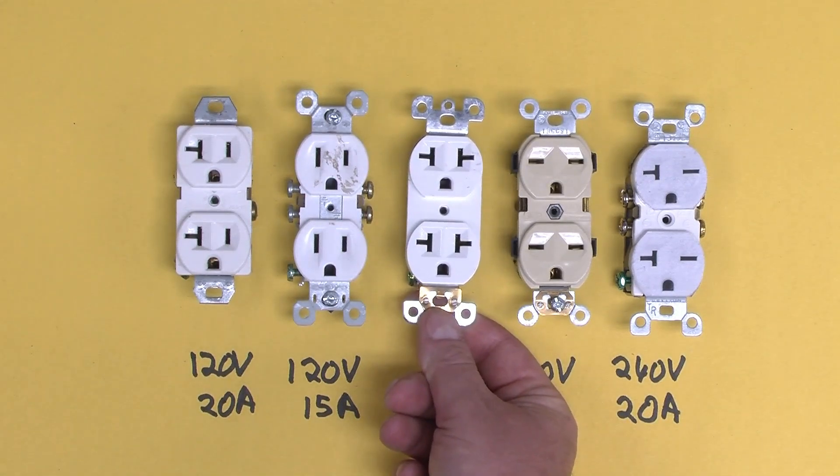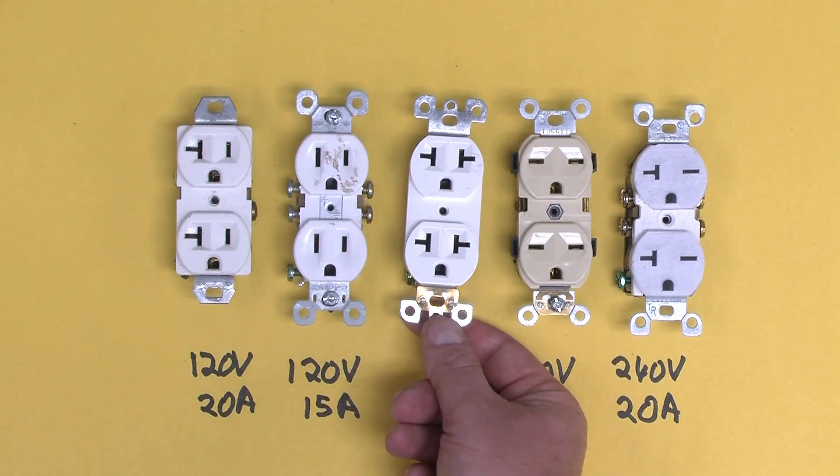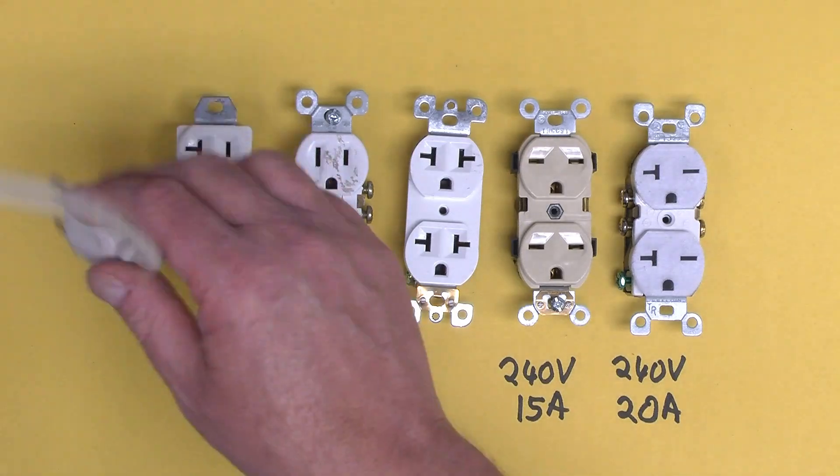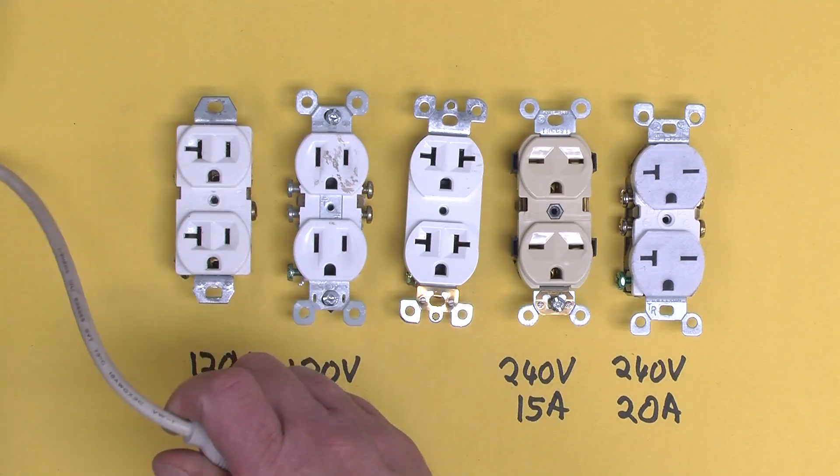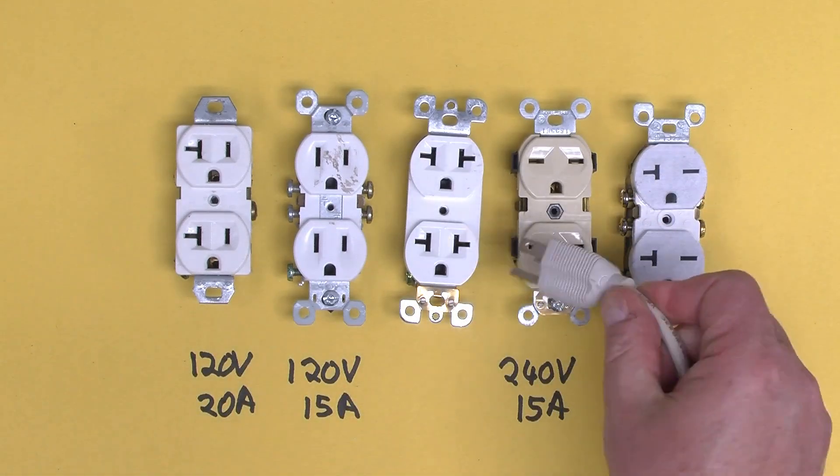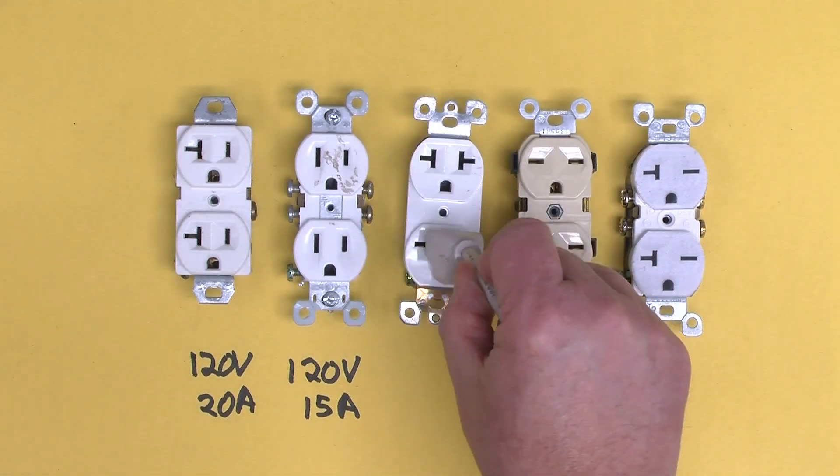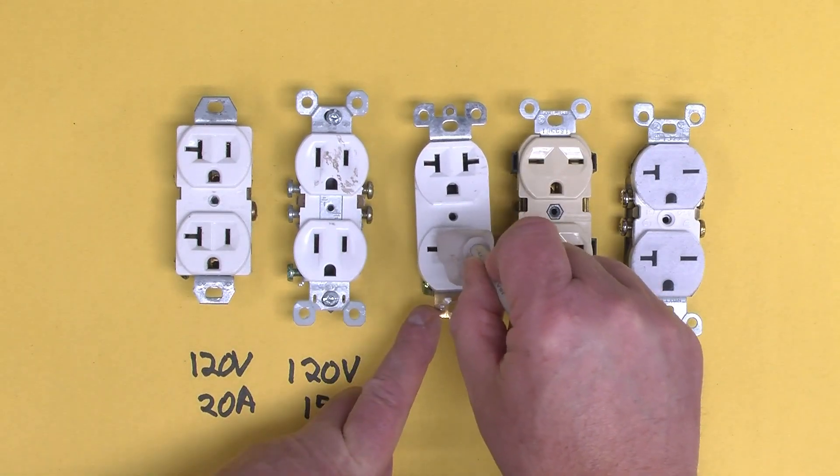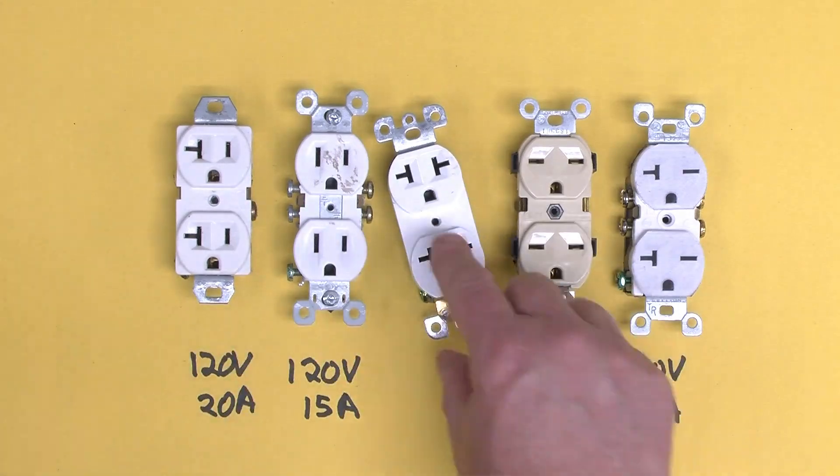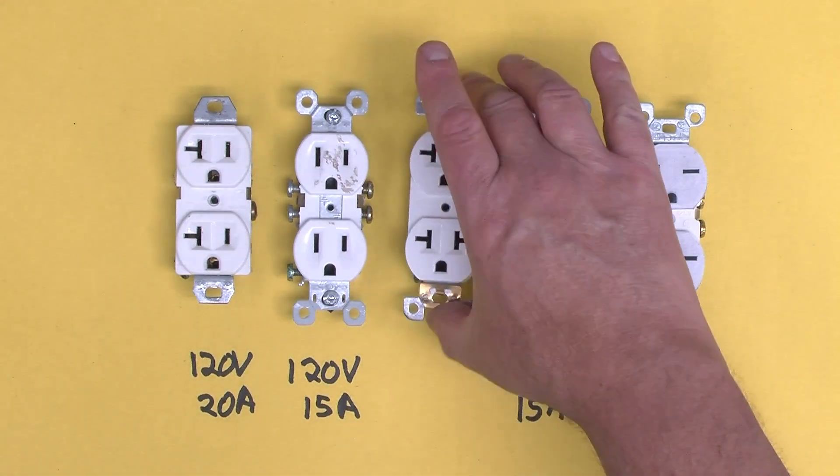But in a North American situation, it is a really terrible idea because you could take your 120 volt vacuum cleaner and your 120 volt light bulb, and if this was set up for 240 volts, plug it in here and blow one of those things up, generally not a good idea.